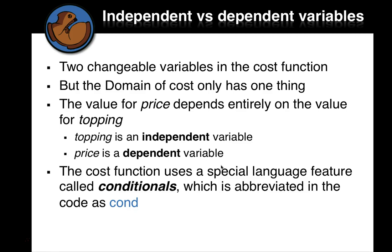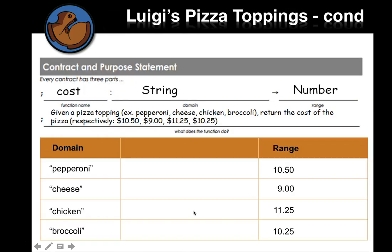The cost function uses a special language feature called conditionals. And think about what the word condition means in English. If I give you a condition, that means one thing's going to happen if the condition is met, and another thing might happen if the condition is not met. And so in our racket programming language, we're going to use this word cond, C-O-N-D, to handle conditionals. All right, and we're going to use this middle column to kind of say what that's going to look like. So here's the conditional.